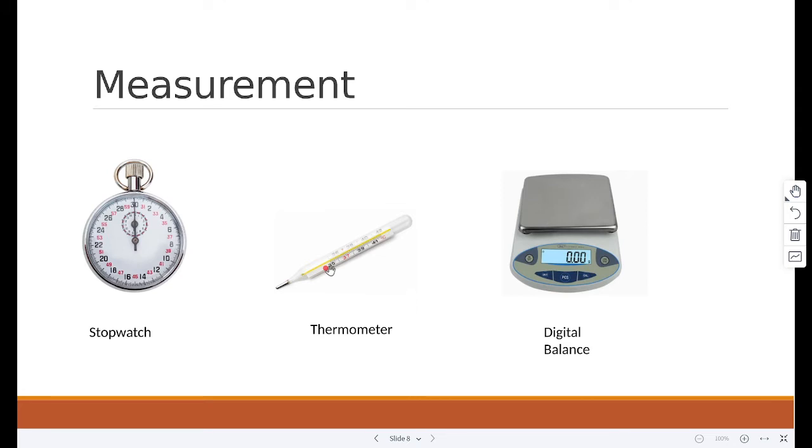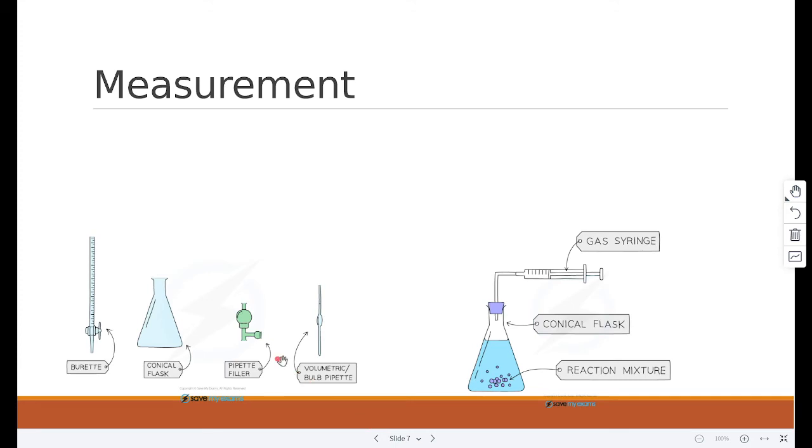We can measure mass by a digital balance. The digital balance has to be set to zero, as you can see here, before using. The standard unit is kilograms or grams. Now we can measure volume of liquid by different apparatuses.